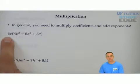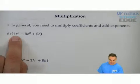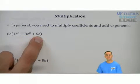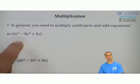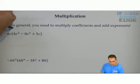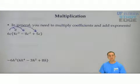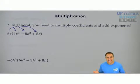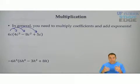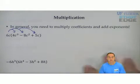In this case, we have 6c, a monomial, times 4c cubed minus 8c squared plus 5c. That would be called a trinomial — three terms. We're going to distribute, multiply 6c times each term in the parentheses. Multiply the coefficients — the numbers in front — and add the exponents, which are the powers.